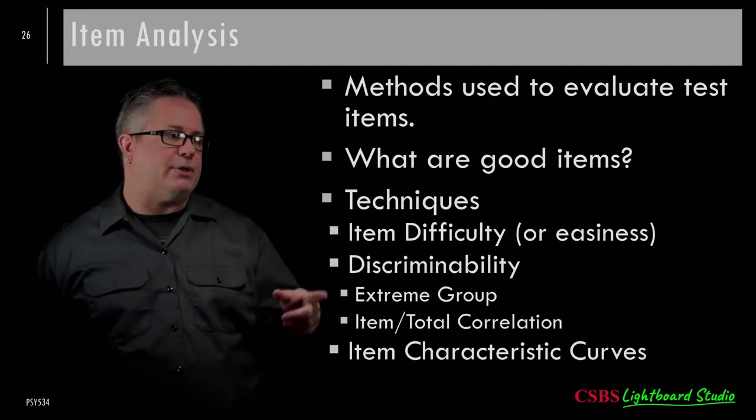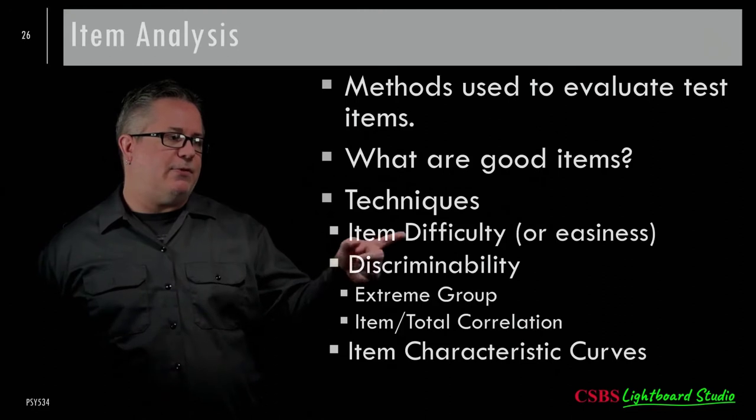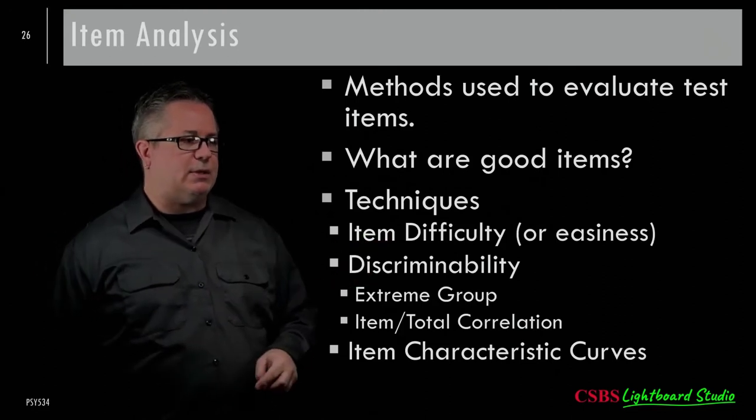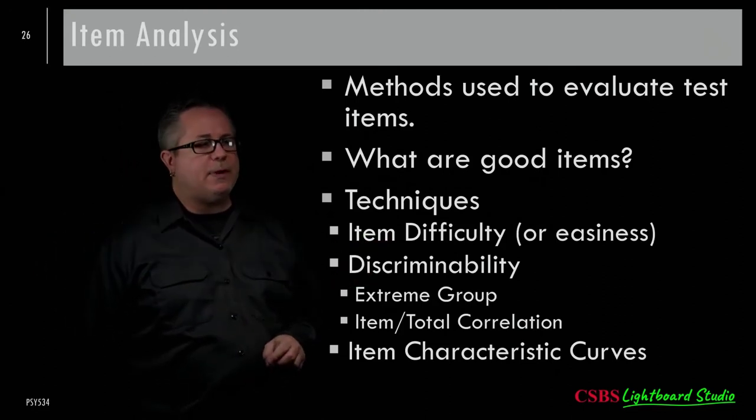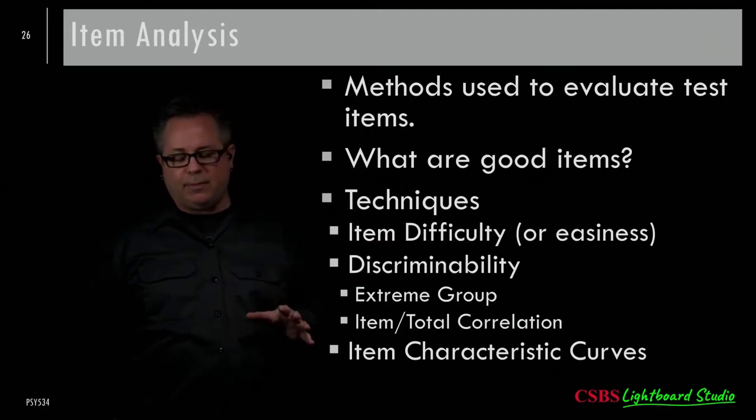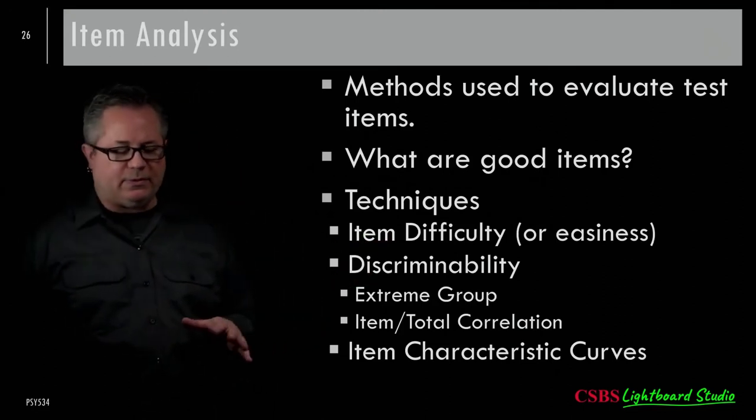For example, if I give a test to 100 students and only 20 answer a question correctly, that's a hard question — low probability of correct response. If 80 or 90 students get it correct, it's an easy question with a higher proportion. So item difficulty is really about the proportion getting it right.